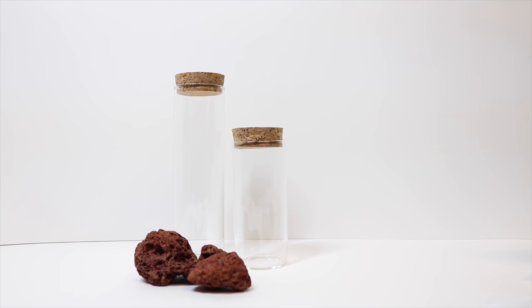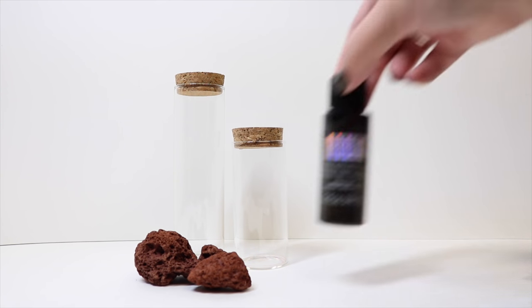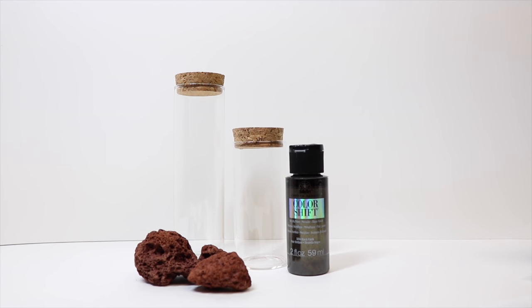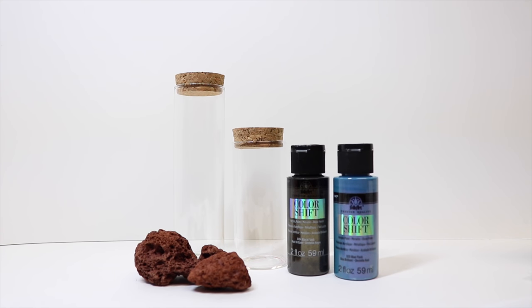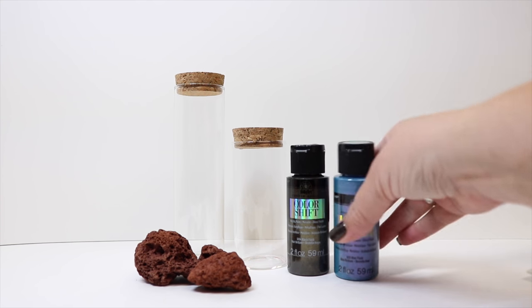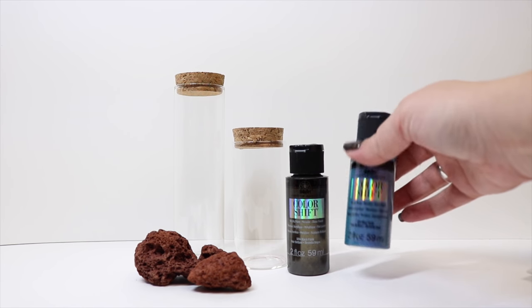I'm also going to put a link in the description down below where you can buy these. Then we're going to need some paints, so we are going to use the black flash color shift acrylic paint and it kind of goes back and forth between a black and a gold. Then we are going to use the blue flash color shift paint and this goes kind of between like a teal bluey purple color.